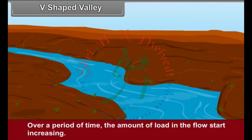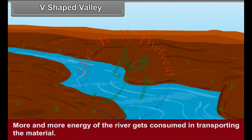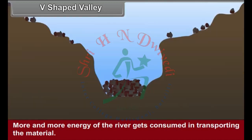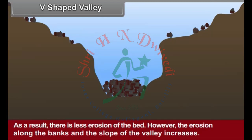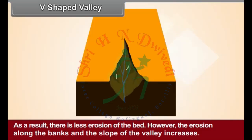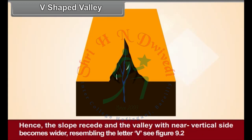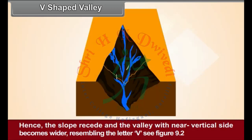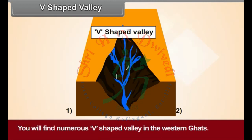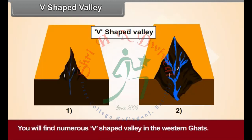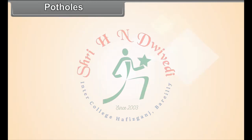V-shaped valley: Over a period of time, the amount of load in the flow starts increasing. More and more energy of the river gets consumed in transporting the material. As a result, there is less erosion of the bed. However, the erosion along the banks and the slopes of the valley increases. Hence, the slopes recede and the valley with near vertical sides becomes wider, resembling the letter V. See figure 9.2. You will find numerous V-shaped valleys in the Western Ghats.